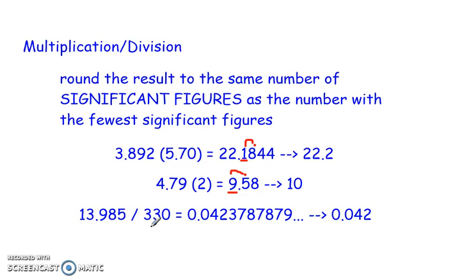13.985 divided by 330 gives me a really long decimal in my calculator, and I wrote out all of it that my calculator displayed. Usually when I do calculations, I will write out the entire answer before writing the rounded one. That way, in case you happened to get just the significant figure part wrong, you don't have to plug the entire calculation back into your calculator — sometimes there will be multiple steps before you get to your final answer.